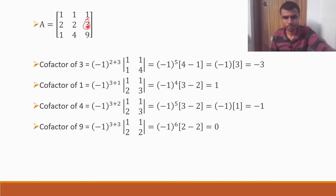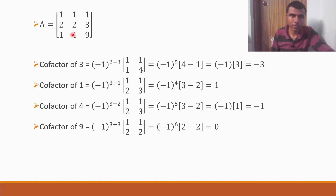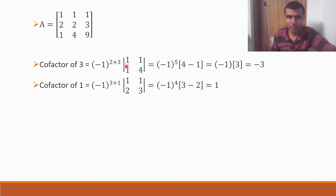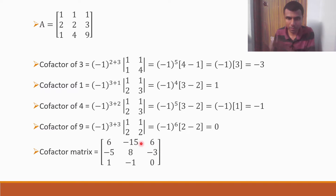Element 1 at row 3, column 1: (−1)^(3+1) × det[1 3; 1 3] = 1 × ... giving 1. Element 4 at row 3, column 2: (−1)^(3+2) into det of [1 1; 2 3] = −1. Element 9 at row 3, column 3: (−1)^(3+3) × det[1 1; 2 2] = 0. So the nine cofactors are: 6, −15, 6, −5, 8, −3, 1, −1, 0. The cofactor matrix is [6, −15, 6; −5, 8, −3; 1, −1, 0].